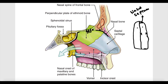The floor of each half of the nasal cavity is made by the hard palate, which is composed of two main parts. Anteriorly, the hard palate is formed by the palatine process of the maxilla. Posteriorly, it is formed by the horizontal plate of the palatine bone.